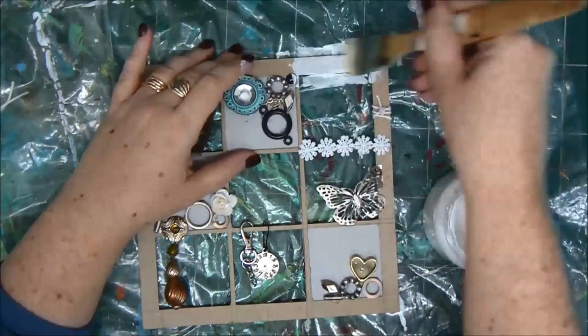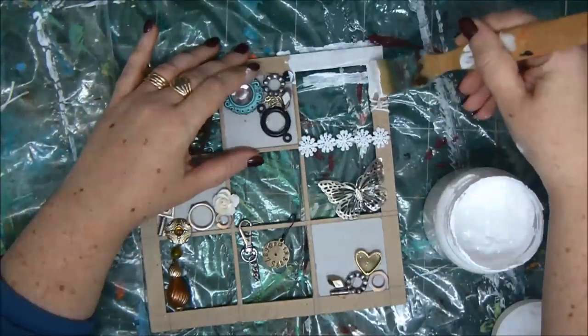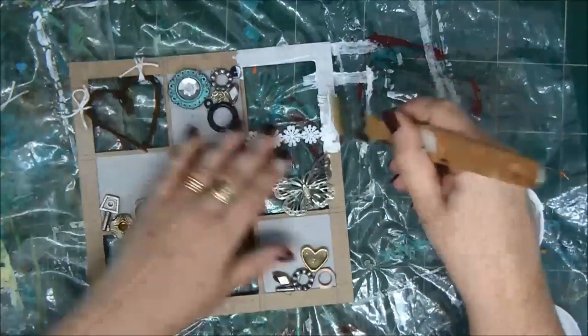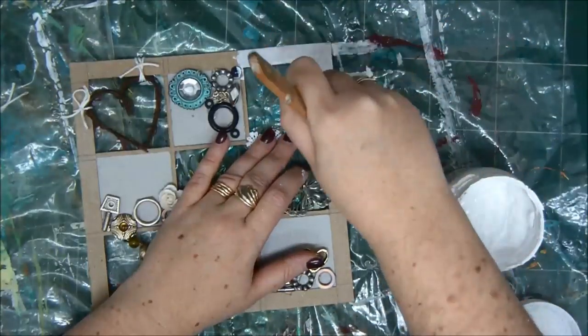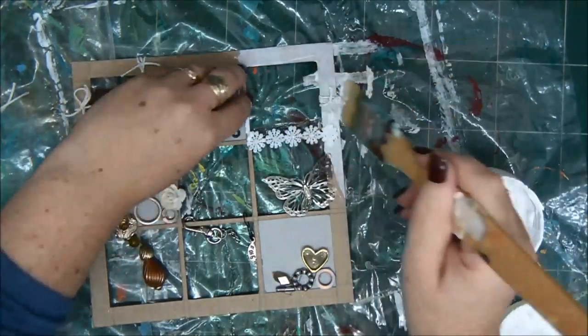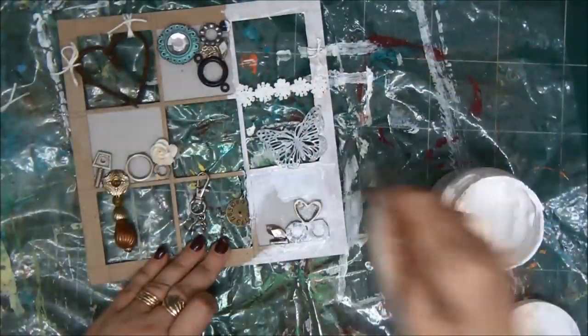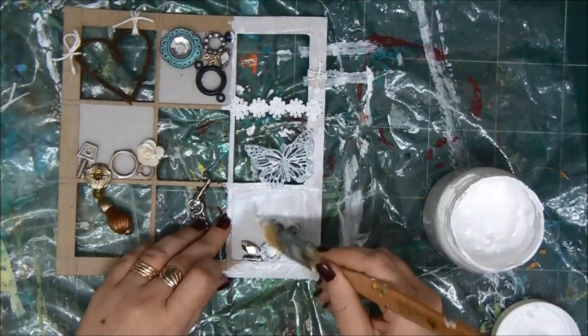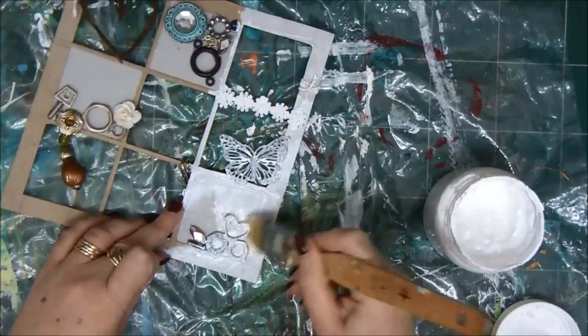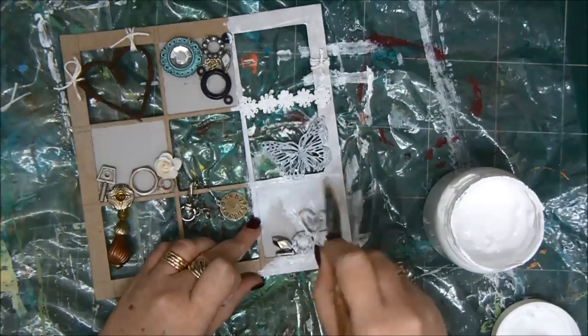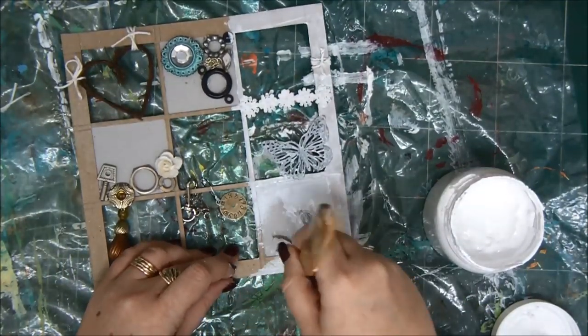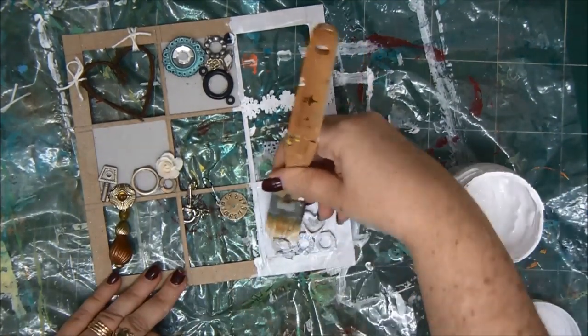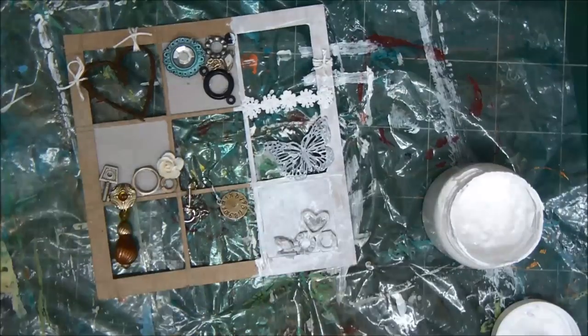Now we have to cover everything with gesso. And you have to really go to all the nooks and crannies and make sure everything is covered. Because if it will not be covered, the color spray will not stick to it. You need a lot of patience you guys. I'm sorry. But you need a lot of patience. It takes a while to cover everything with gesso, especially the hanging stuff. It takes time. So just be patient. Believe me, it's worth it.